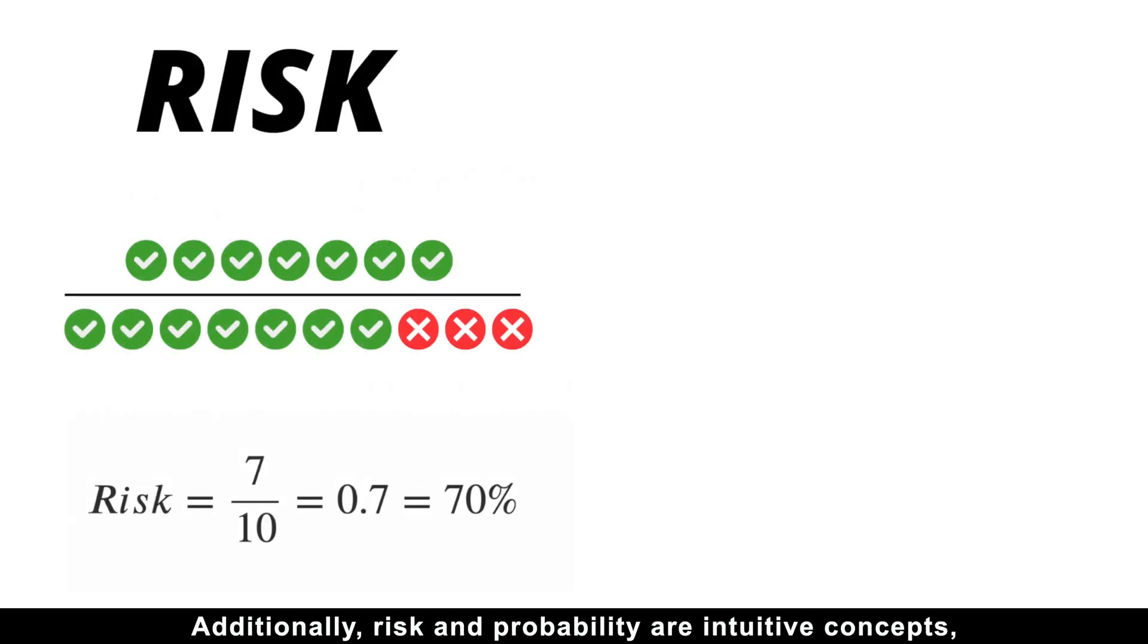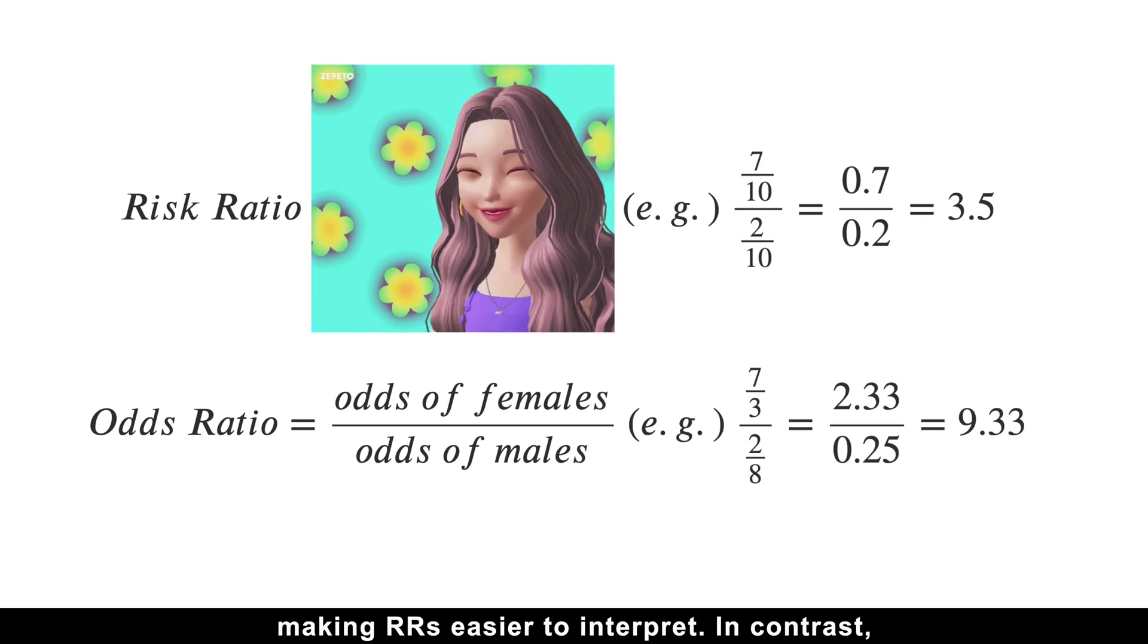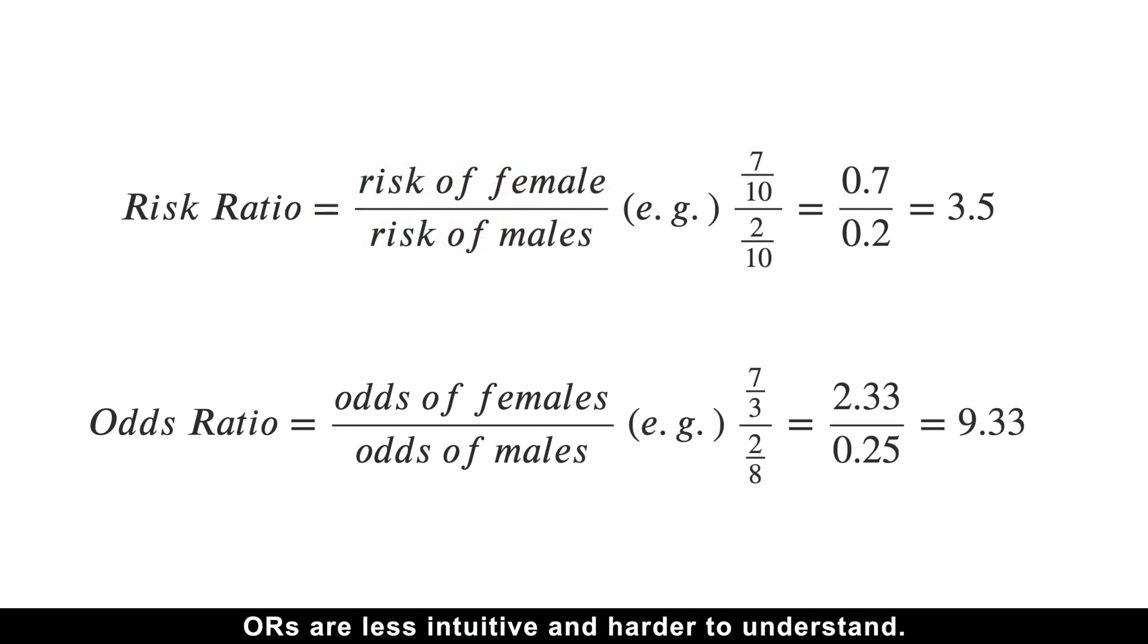Additionally, risk and probability are intuitive concepts, making risk ratios easier to interpret. In contrast, odds ratios are less intuitive and harder to understand.